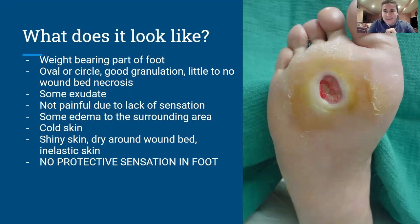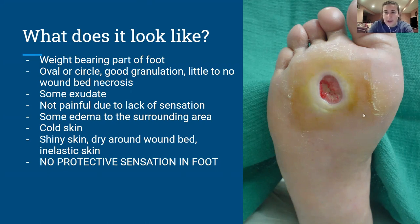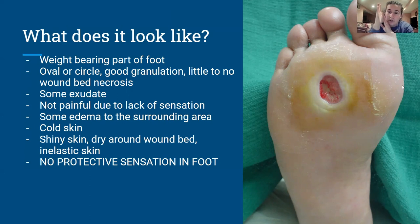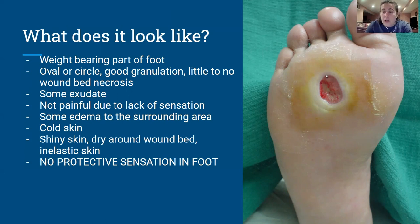What does a neuropathic ulcer look like? This patient had the wound covered because it was on the bottom of their foot. Looking at this wound, you can see it's an oval shape along the weight-bearing part of the foot — right smack dab in the middle. This is the most common area you'll see it. Sometimes it also appears on the side of the foot near the first met head, where a bunion might rub against the side of the shoe.